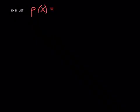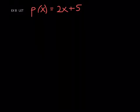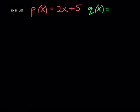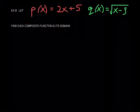Here we go to example eight. This is going to be your brand new given function. Let p of x be 2x plus 5 — notice that this is a linear function. And let q of x be the square root of x minus 3. What they're going to want us to find is some composite functions and their domain. Find each of the following composite functions and their domain.